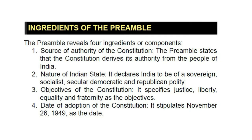Ingredients of the Preamble. The preamble reveals four ingredients or components. 1. Source of authority of the Constitution: the preamble states that the Constitution derives its authority from the people of India. 2. Nature of Indian State: it declares India to be a sovereign, socialist, secular, democratic and republican polity. 3. Objectives of the Constitution: it specifies justice, liberty, equality and fraternity as the objectives. 4. Date of adoption of the Constitution: it stipulates November 26, 1949 as the date.